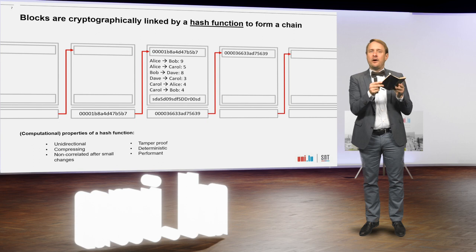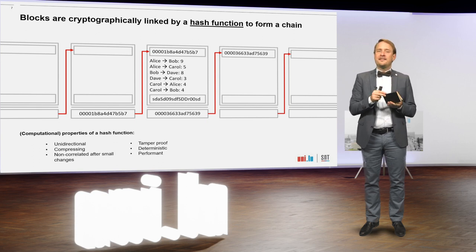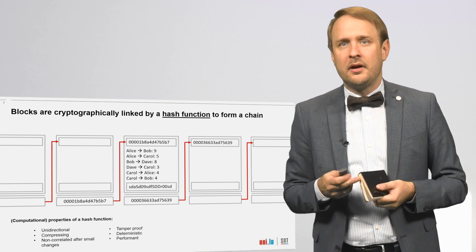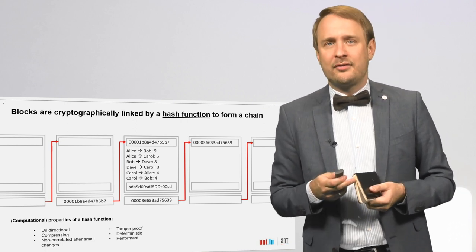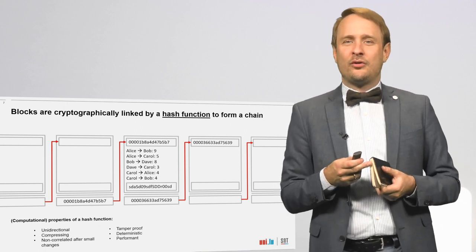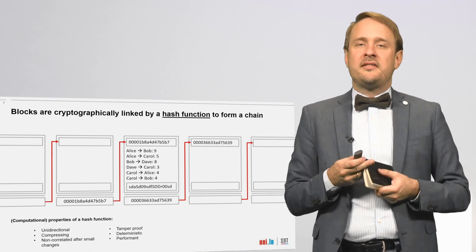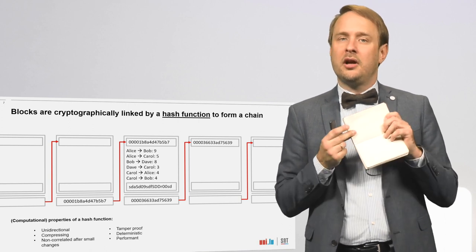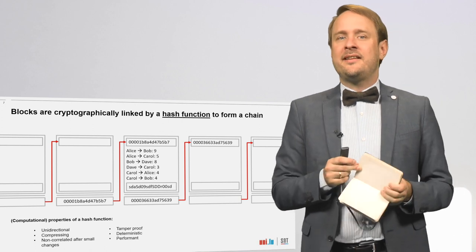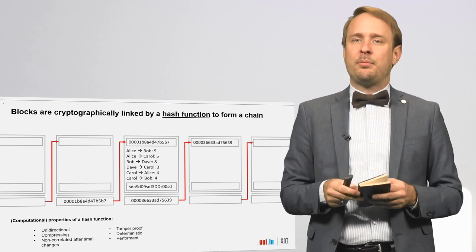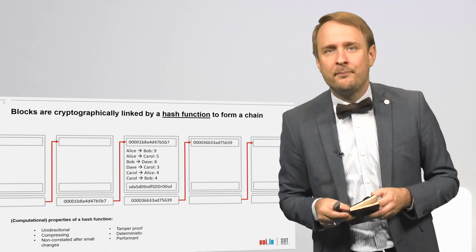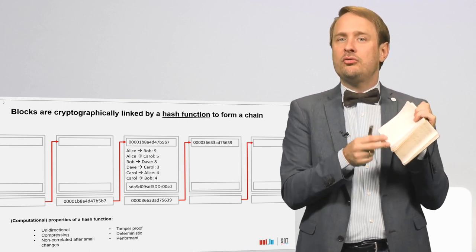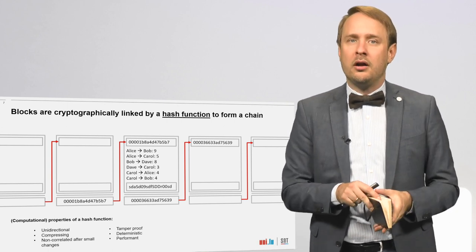This creates the binding of our magic notebook — this is the chain in blockchain. Now, how does this chaining of blocks help? Let's say Alice wants to alter some of her previous transactions — she wants to change the 9 she transferred to Bob to a 3. After this manipulation, the hash value at the bottom of the page will not match, and the block would be invalid. Even if Alice can recalculate the manipulated block's new hash value, this does not help her, because she would need to recalculate the hash values of all following blocks.